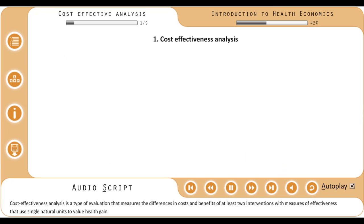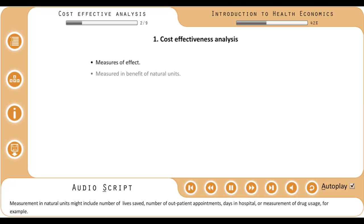Cost-effectiveness analysis is a type of evaluation that measures the differences in costs and benefits of at least two interventions, with measures of effectiveness that use single natural units to value health gain. Measurement in natural units might include number of lives saved, number of outpatient appointments, days in hospital, or measurement of drug usage, for example.